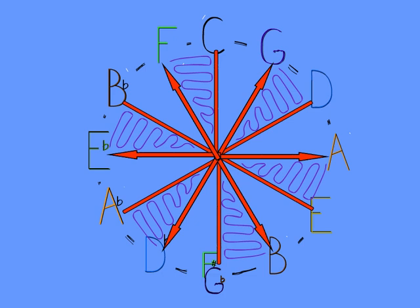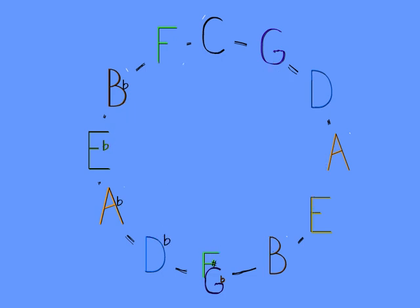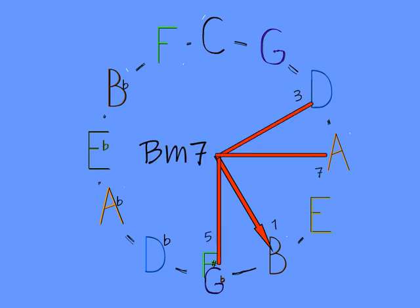We saw in the last video how the minor 7 chord has two sets of 1-5 pairs. If we use B as our root note, B minor 7 is B, D, F sharp, A.